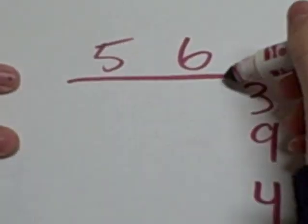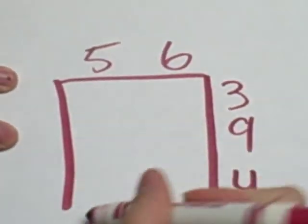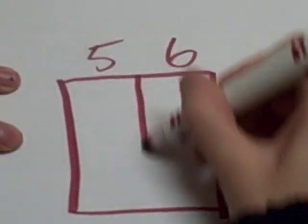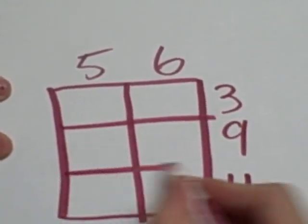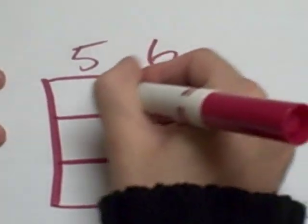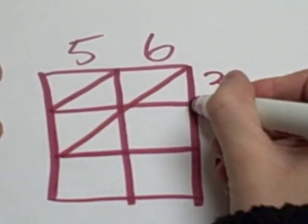Now, because we're timesing a 2-digit times a 3-digit number, we need to make a 2 by 3 box. And then we make sure to divide it in half into triangles.